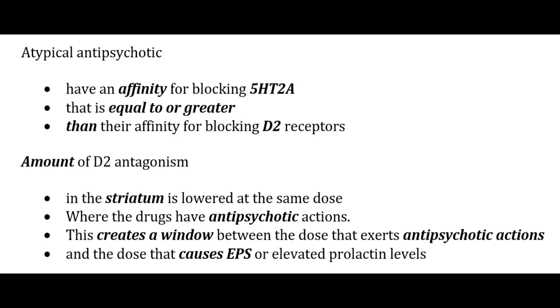The Making of a Therapeutic Window. Atypical antipsychotics have an affinity for blocking 5HT2A receptors that is equal to or greater than their affinity for blocking D2 receptors. The amount of D2 antagonism in the striatum is lowered at the same dose where the drug has antipsychotic actions. Interestingly, this creates a window between the dose that exerts antipsychotic actions and the dose that causes EPS or elevation of prolactin levels.